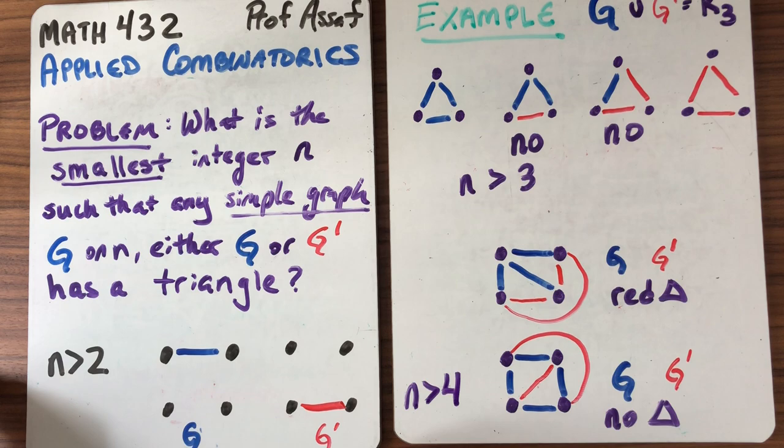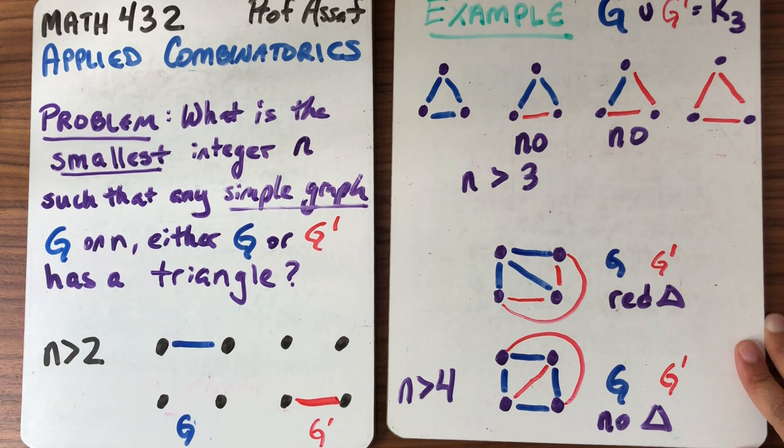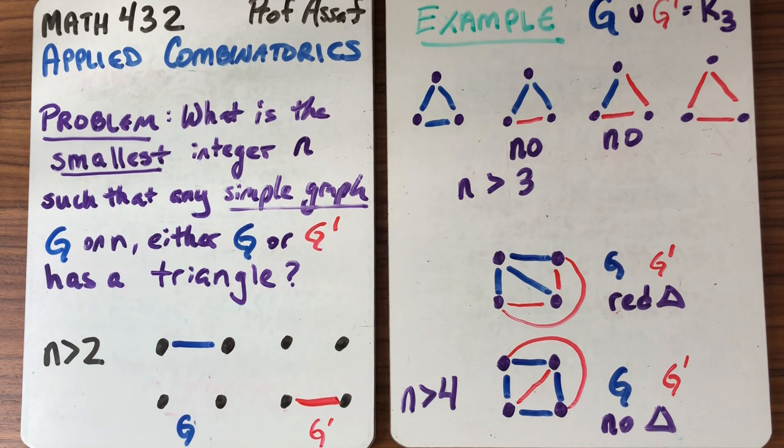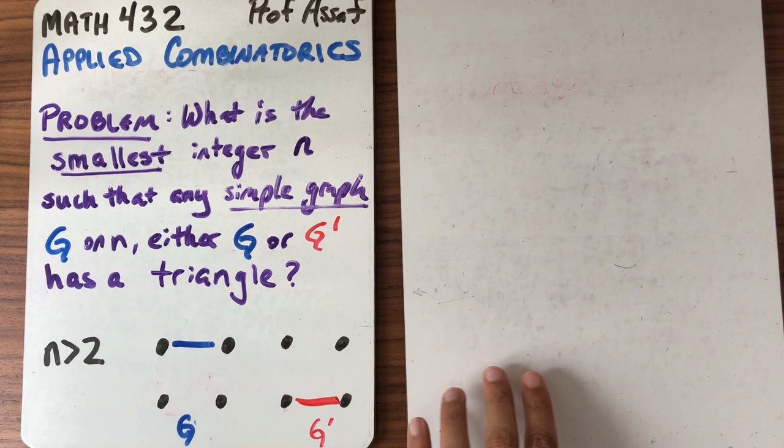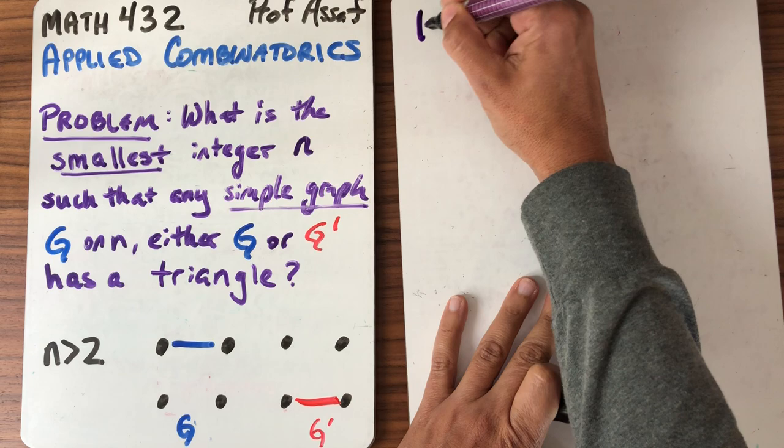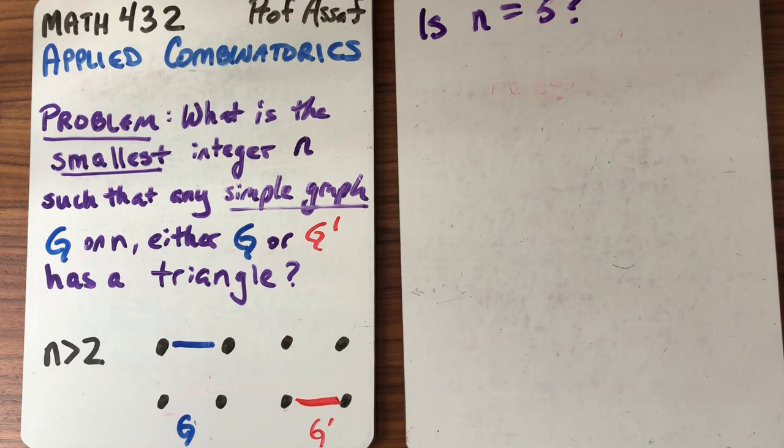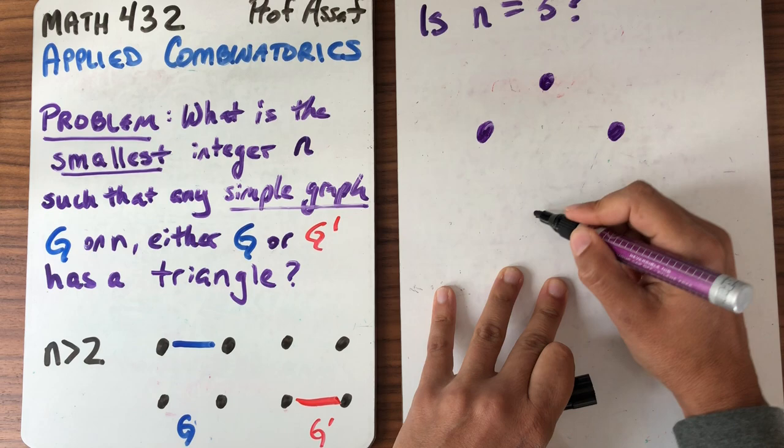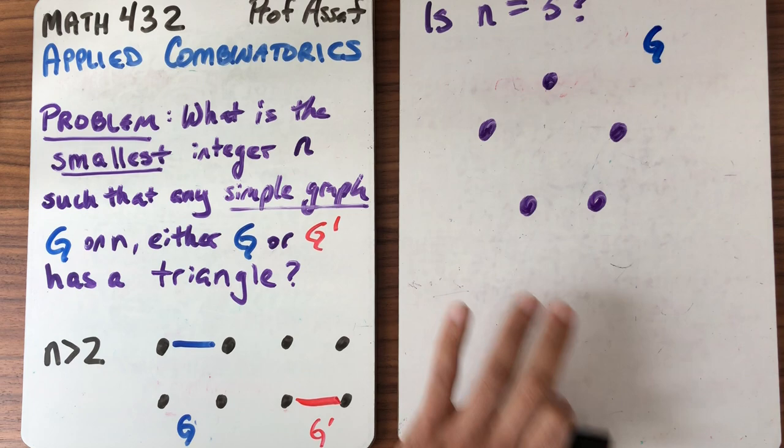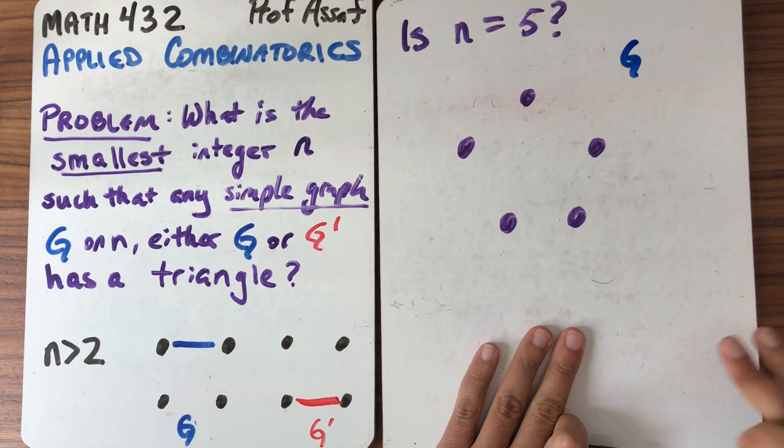It's not clear that we can ever do it. It might be the case that every single graph we ever draw, no matter how many vertices, will never be forced to have a triangle either in g or in g prime. But let's keep going anyway. Can I do it for 5? So we know that n is at least 4. Is n equal to 5 is the next question that we want to answer.